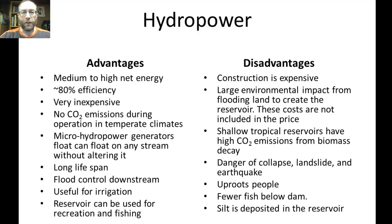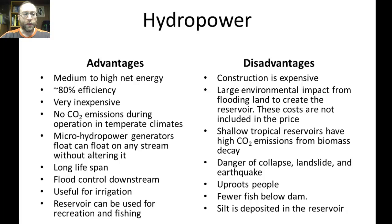Hydropower has quite a few advantages and disadvantages. Advantages include medium to high net energy, about 80% efficiency, and it's very inexpensive to run with no refueling needed. In temperate climates there are no CO2 emissions. Negatives can be avoided using micro-hydropower generators, where turbines are placed in the river itself without damming it so the stream isn't altered. Dams have a very long lifespan and provide flood control downstream — for example, the Aswan Dam across the Nile stopped annual flooding. Reservoirs are also useful for irrigation and recreation, like Lake Powell.